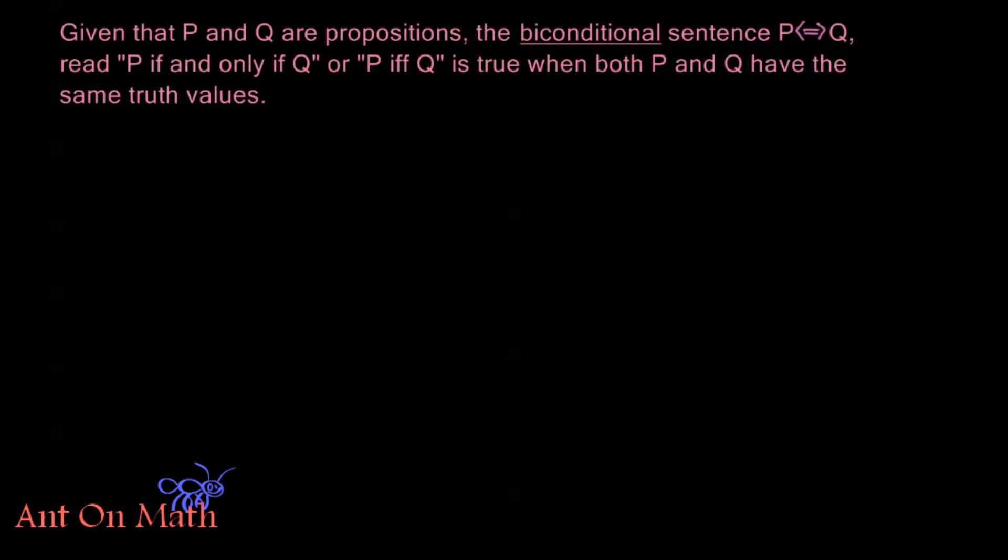It's fairly intuitive in nature, and we'll define it a couple of different ways. Given that P and Q are propositions, the biconditional sentence P with this double arrow symbol is read 'P if and only if Q,' or we sometimes shorthand if and only if to IFF. This is true when both P and Q have the same truth values - either P and Q are both true, or P and Q are both false.